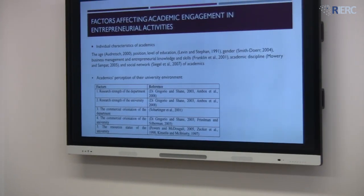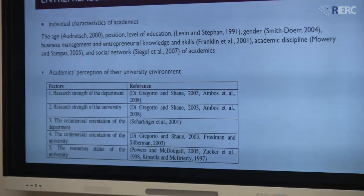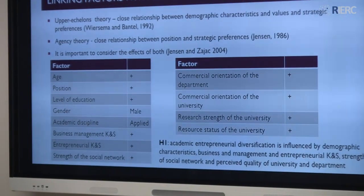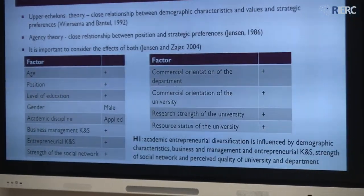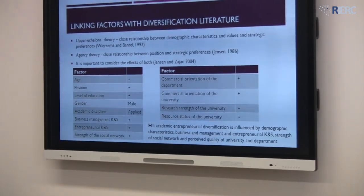Since we were focusing on diversification and entrepreneurial engagement, we look at the perception of academics about their environment rather than using objective criteria. It also helps us practically: in Sri Lanka we have only 13 universities, so if we use university-level objective criteria, we do not have enough heterogeneity to run a regression. But the theoretical argument is that perception matters for entrepreneurial engagement, particularly to spot opportunities. We are still in the process of linking individual and perceptual factors with the diversification literature.